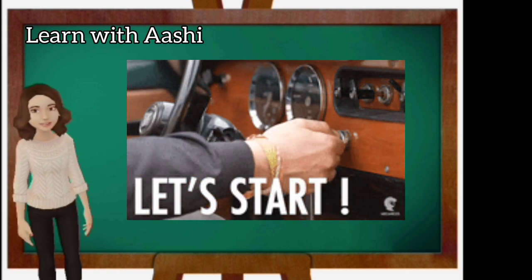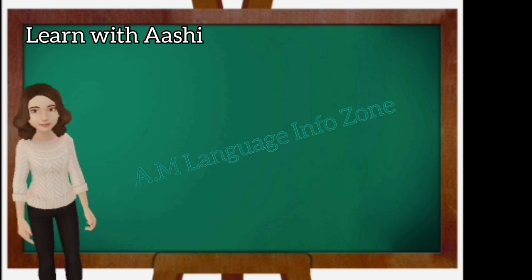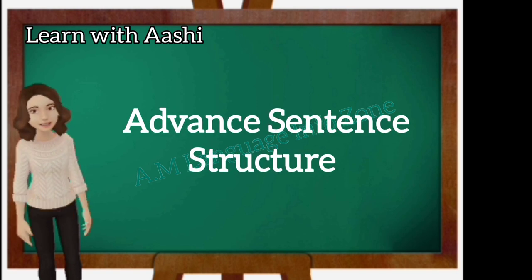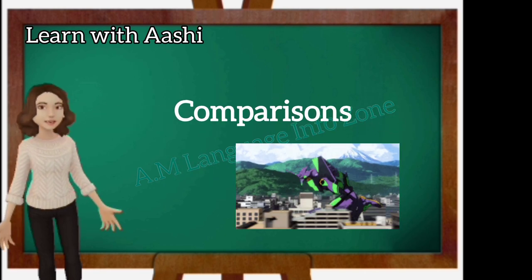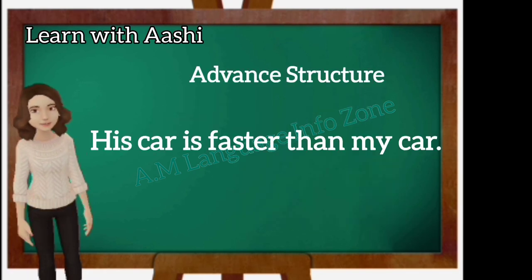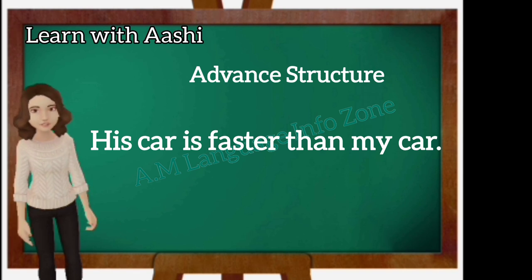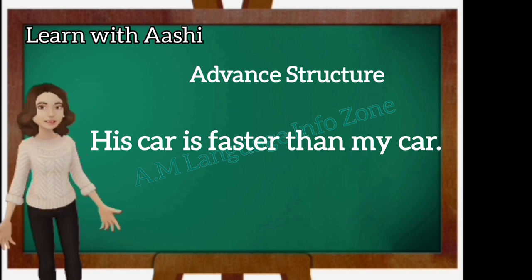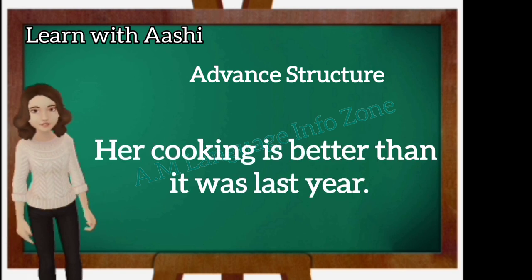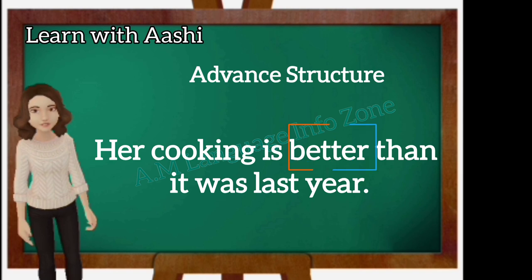Now let's start with a quick review of a simple concept that's going to be a key for learning this advanced sentence structure. Do you remember learning comparisons in your English classroom? Like this sentence: his car is faster than my car, or his bike is faster than my bike. In this sentence, the word 'faster' is a comparison. Or: her cooking is better than it was last year, her English is better than it was last year — 'better' is our comparison word in this sentence.